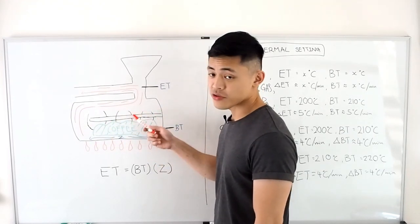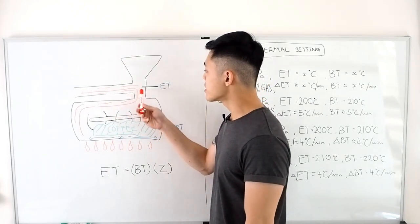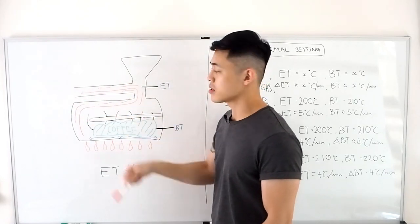It heats up the air in the drum and the coffee inside the drum, which is represented by this green section here. And then the hot air finally exits through the exhaust chamber of the roaster.